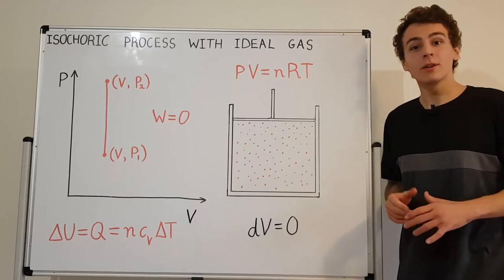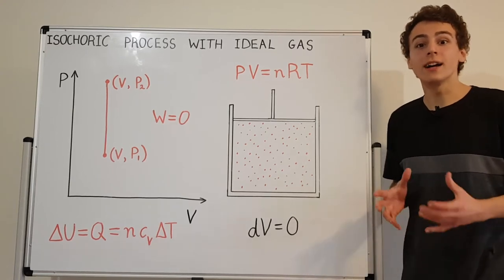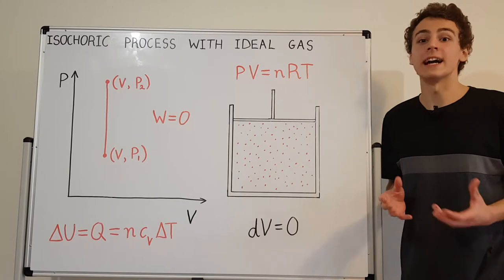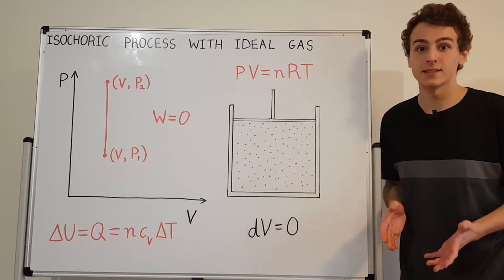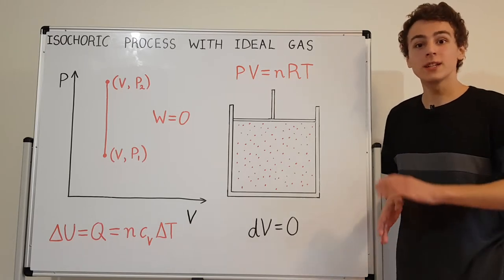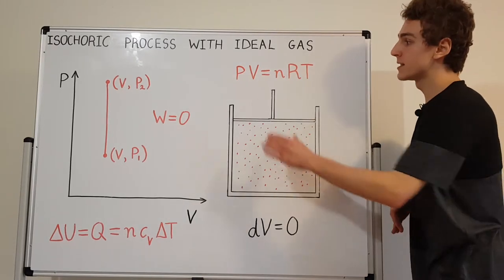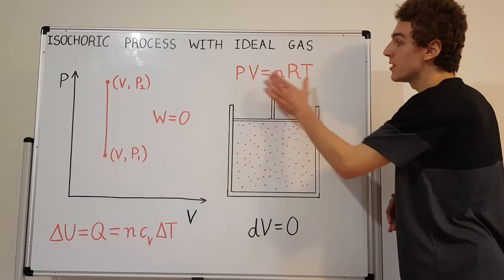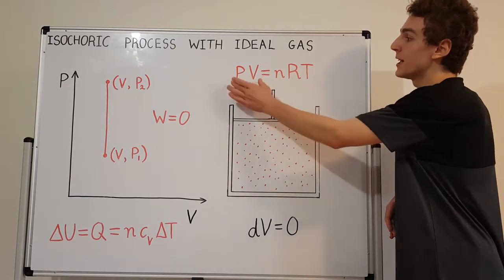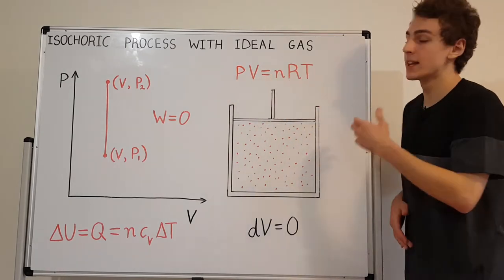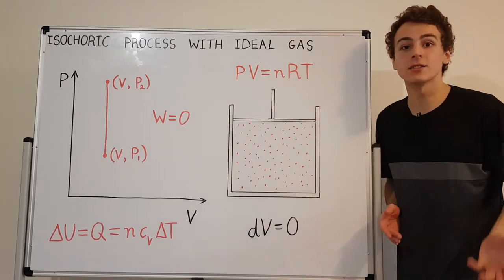In this video, I'm going to be talking about isochoric processes with ideal gases. So what is an ideal gas? That's a gas that satisfies this equation, PV equals nRT. That's the ideal gas law.